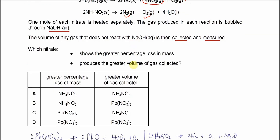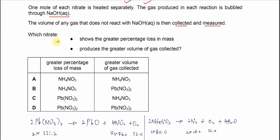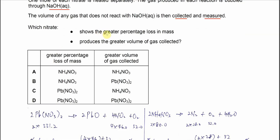Now the question is, which nitrate shows the greater percentage loss in the mass and produces the greater volume of gas collected? For the first one, greater percentage loss, it must be because of the gas. Because the gas will release and it will go away. So the percentage loss is because of the gas.